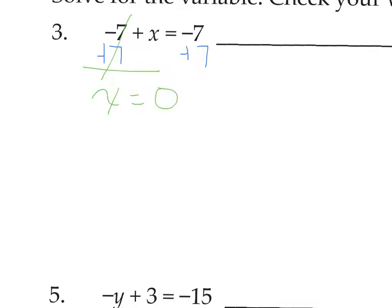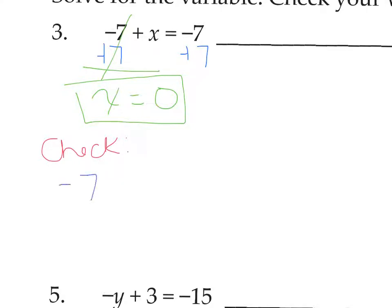0 is a real number — x can equal 0. Just because you get 0 doesn't mean you made a mistake. To check it, take the 0 and substitute it back in for x in the original equation. We should have negative 7 plus 0 equals negative 7. Is that a true statement? Yes, it does, so you know you have the right solution.